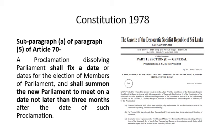Under Article 70, Paragraph 5, Subparagraph A, a proclamation dissolving the Parliament shall fix a date or dates for the election of members of Parliament, and summon the new Parliament to meet on a date not later than three months after the date of such proclamation.